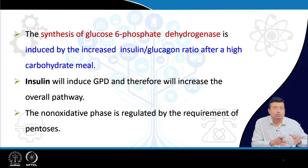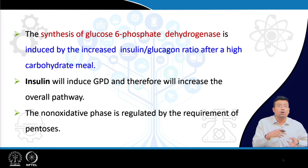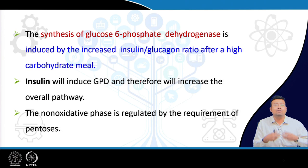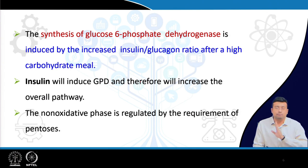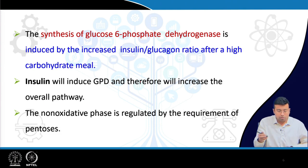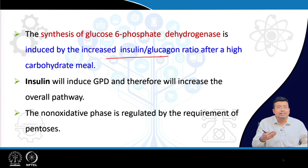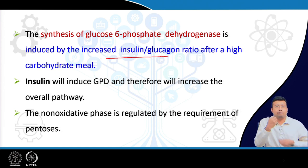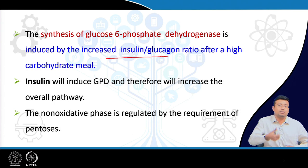Since HMP shunt is an anabolic process, we extrapolate our concept from regulation of enzyme action: when a process is anabolic, insulin and dephosphorylation help its progress. The synthesis of glucose-6-phosphate dehydrogenase is actually induced by an increased insulin-to-glucagon ratio. The more insulin, the more the pathway runs — and insulin levels are high after a carbohydrate-rich meal.